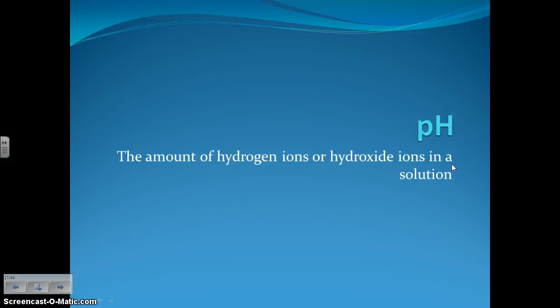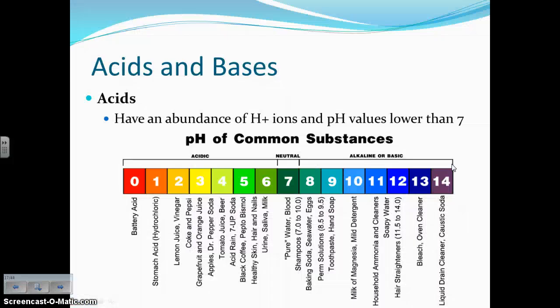Our next topic is pH, which is the amount of hydrogen ions or hydroxide ions in a solution. More specifically, we'll focus on values of acidity or basicity. Acids have an abundance of hydrogen ions — H+ ions — and have pH values lower than 7.